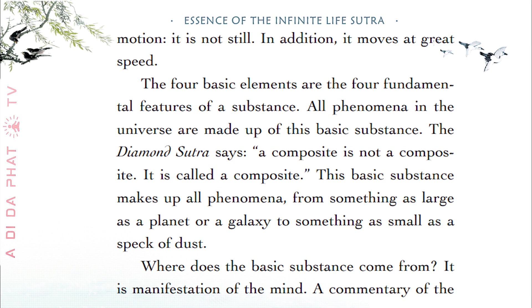All phenomena in the universe are made up of this basic substance. The Diamond Sutra says a composite is not a composite — it is called a composite. This basic substance makes up all phenomena, from something as large as a planet or galaxy to something as small as a speck of dust. Where does the basic substance come from? It is a manifestation of the mind.